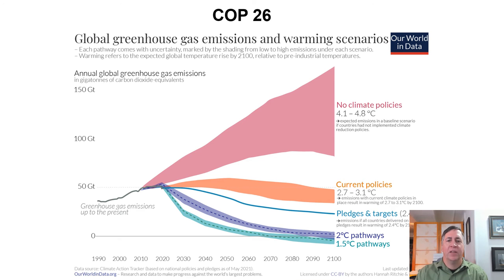The most recent global climate summit, COP26, was held recently. Importantly, countries agreed to attempt to limit warming to 1.5 degrees Celsius. And if they fulfill the promises they made before and during the summit, warming could be limited to 1.8 degrees — far less destructive than the 4 to 5 degrees Celsius forecast when countries were doing nothing. Hundreds of financial institutions and other businesses also committed to net zero emissions by 2050, and more than 140 countries pledged to reverse deforestation by 2030. Follow-up is needed to ensure that signatories meet and exceed their climate pledges and start bending the emissions curve now rather than waiting until it's too late.